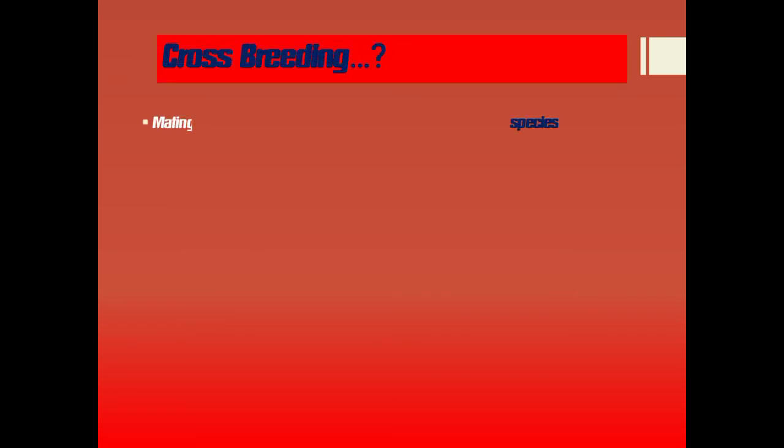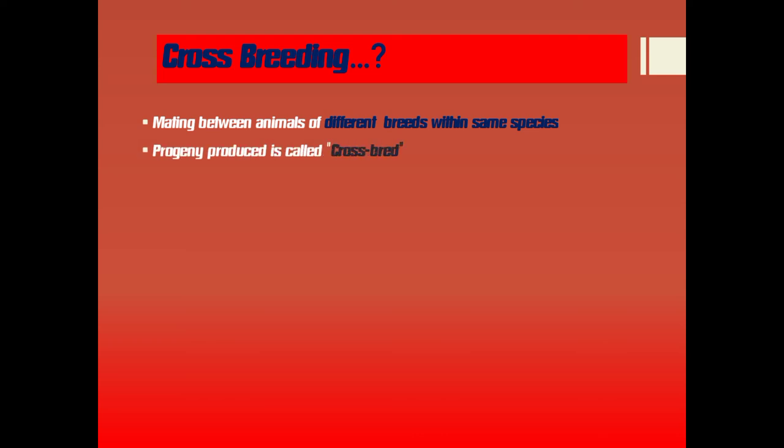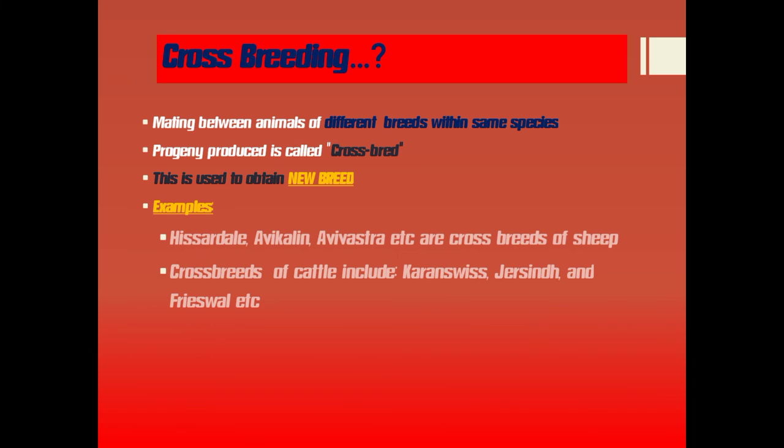Crossbreeding refers to mating between animals of different breeds within the same species. The progeny produced by crossbreeding is referred to as a crossbreed, and this method is used to obtain new breeds. Examples of crossbreeds in sheep include Hizardale, Avicalin, Avivestra, etc. Crossbreeds of cattle include Caron Suits, Gersynth, and Rizual, etc.